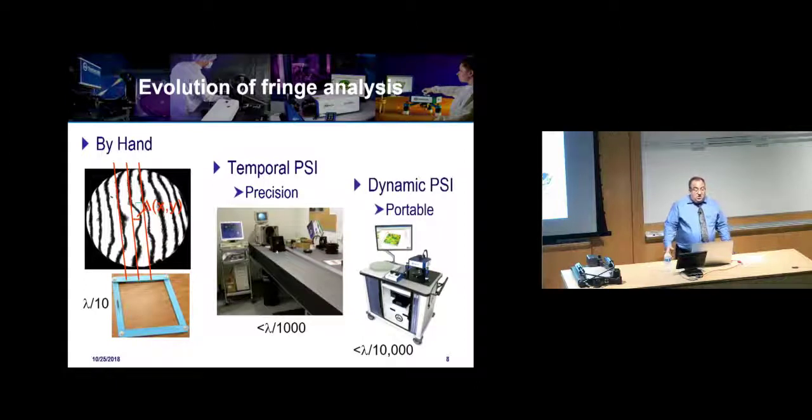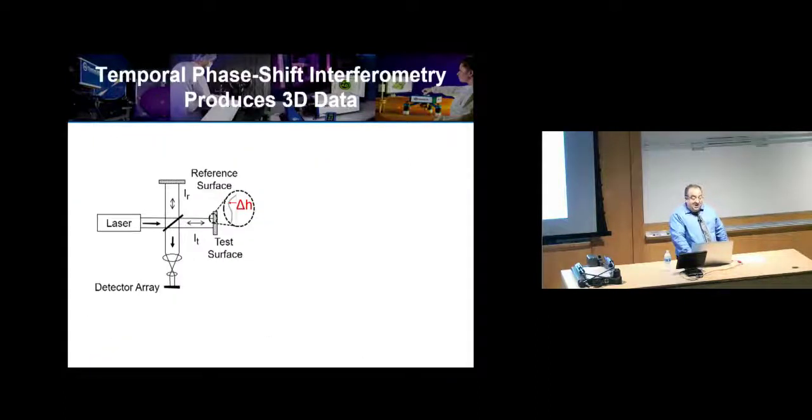Then temporal phase shifting came around in the 80s, essentially commercially. You get very high precision. You're going to manipulate the beams. Now I can get to lambda by a thousand very easily in well-controlled environments and get very good results. And then starting within about the last 15, 20 years, you have dynamic phase shifting capability where you get the 3D information in a single camera frame. What that does is it allows you in good environments to drive down your noise even further than before. In bad environments, you can get measurements where they were otherwise impossible. We'll talk mostly about that here today.